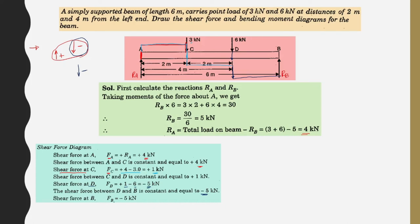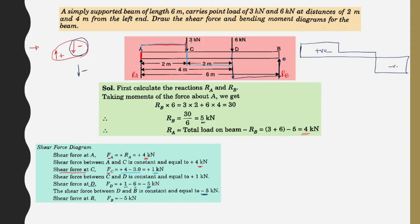Shear force at B is minus 5 kilonewtons on the left side. Moving to the right side, the reaction RB of 5 kilonewtons acts upward, bringing the shear force back to zero. So the shear force diagram shows: 4kN positive, then 1kN positive, then minus 5kN negative, returning to zero at B.